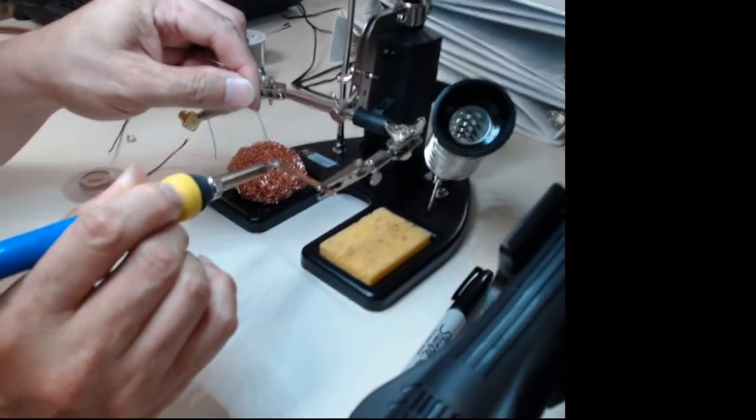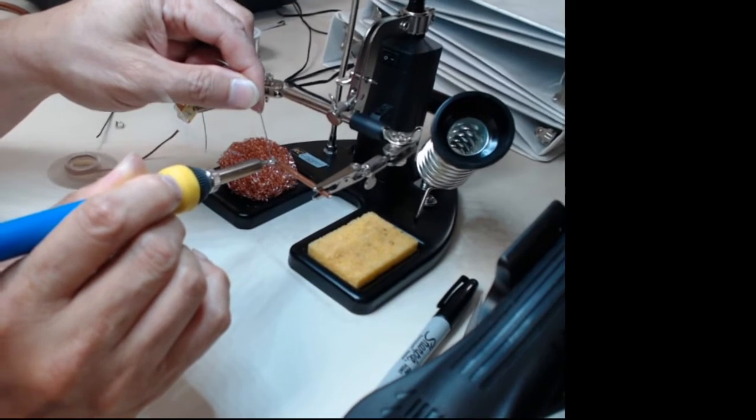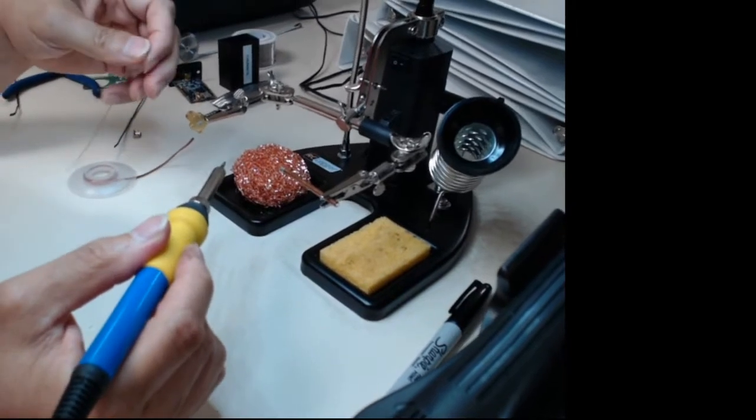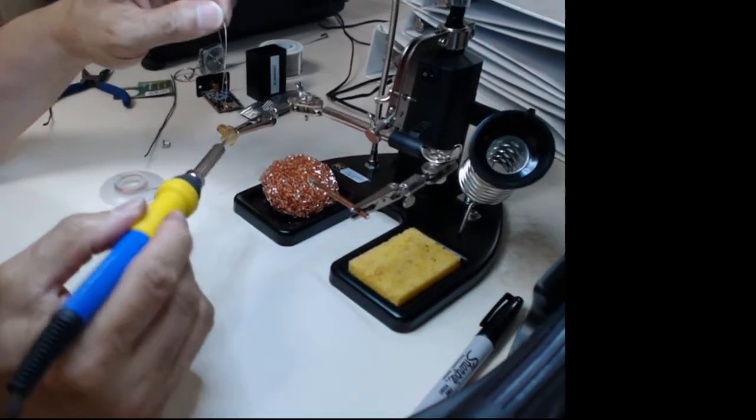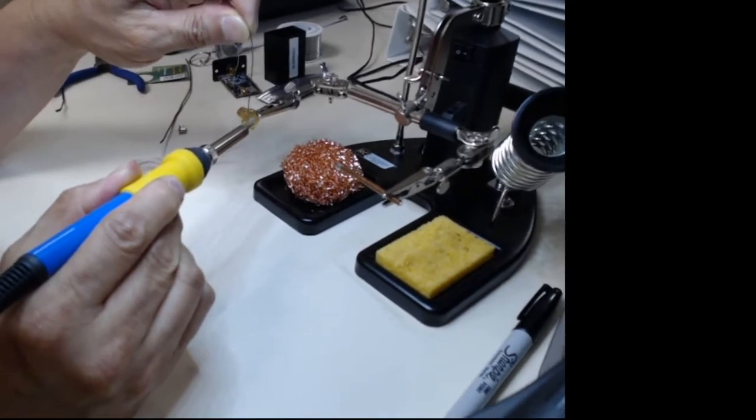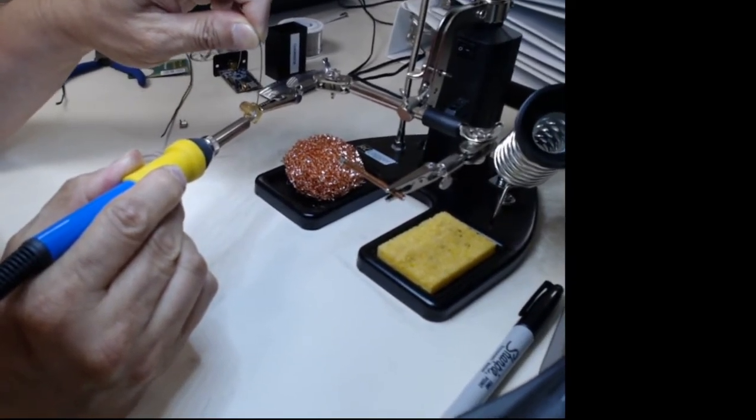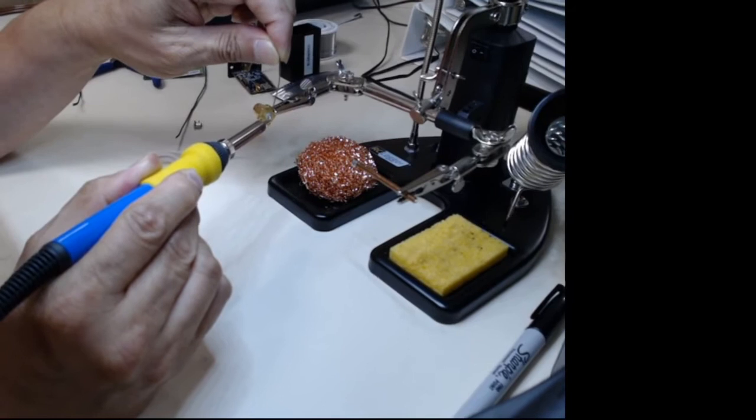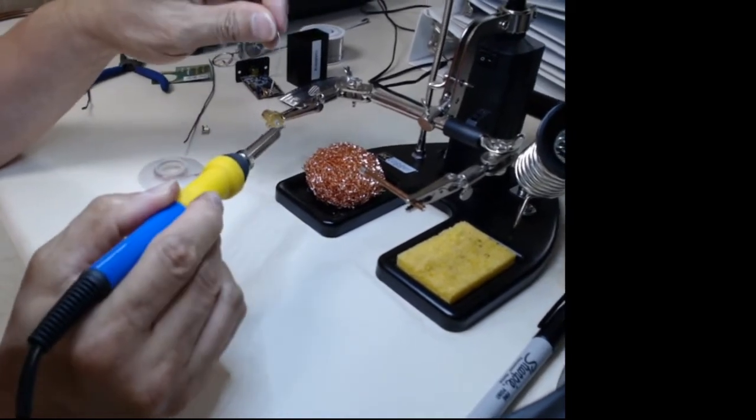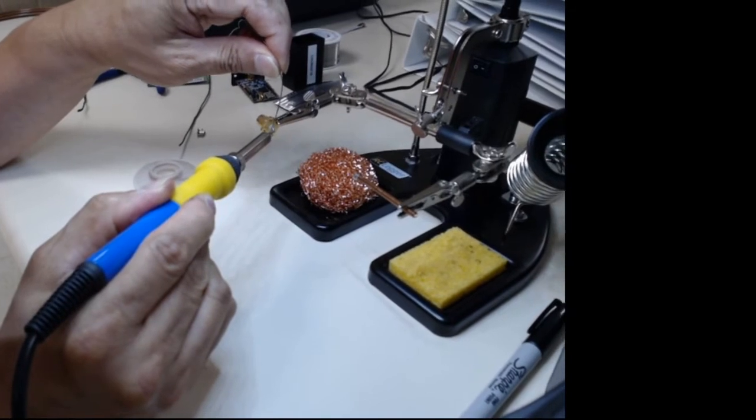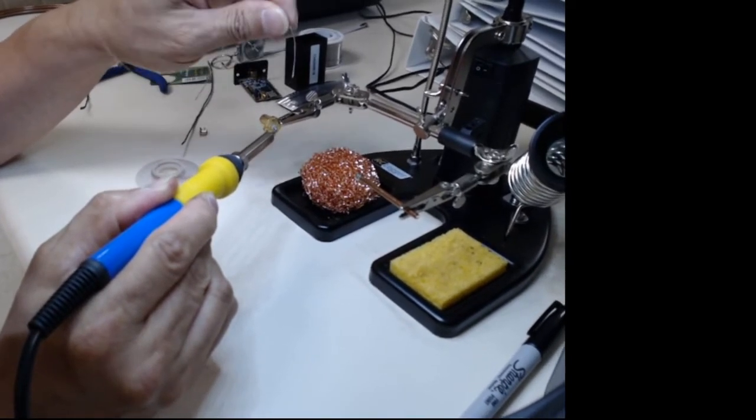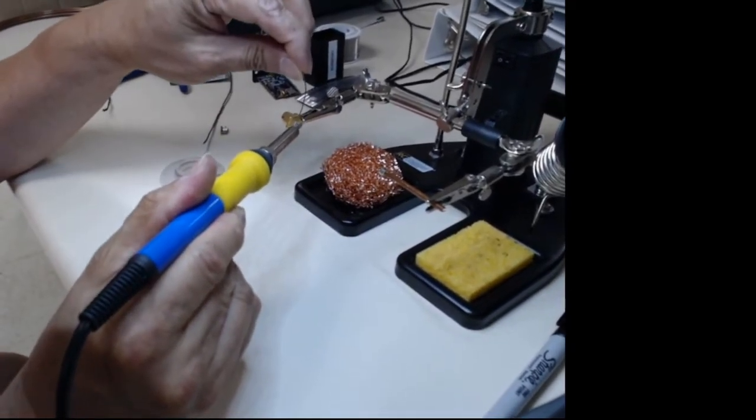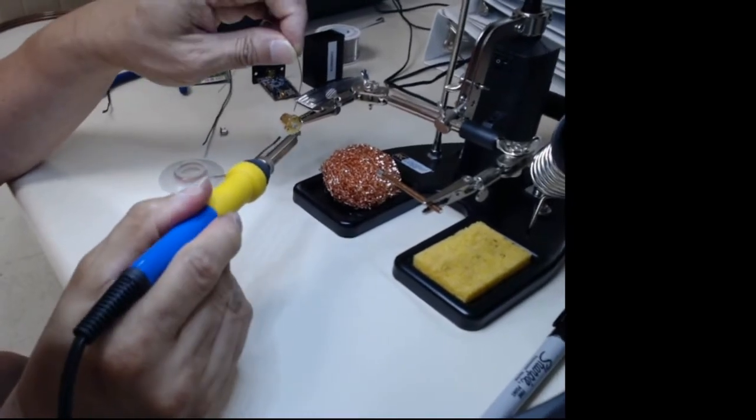Because eventually what we're going to do is solder two pieces together by connecting them with solder versus trying to connect the metal directly and then solder around it. This one will heat up a little faster, and you can see I'm going to get a good amount of solder on there. Almost, that'll do, I think.